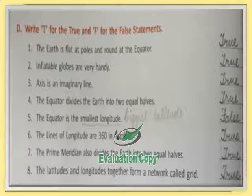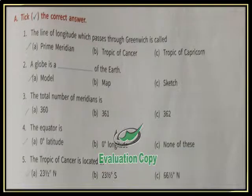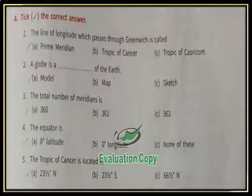The lines of longitude are 360 in number: true. The prime meridian also divides the earth into two equal halves: true. The latitudes and longitudes together form a network called grids: true. The line of longitude which passes through Greenwich is called the prime meridian: true. A globe is a map or sketch: false — it is a model of the earth. The total number of meridians is 360. The equator is zero degree latitude, not longitude — zero degree longitude is the prime meridian. The Tropic of Cancer is at 23 and a half degrees north.